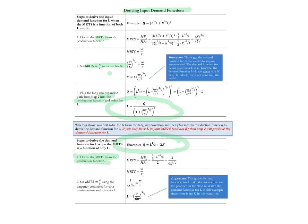Just like before, we're going to derive the MRTS, then set it equal to the input price ratio. Unlike before, when we solve for labor at this point, we already have labor's demand function — we never had to go to the production function to get the demand for labor. Labor demand here is not a function of output; the amount of labor the firm will demand to minimize cost is independent of the level of output, and the firm demands the same quantity of labor for all levels of output. In the case of quasi-linear production, the MRTS is a function of only one input, and therefore the demand for that input will not be a function of output.